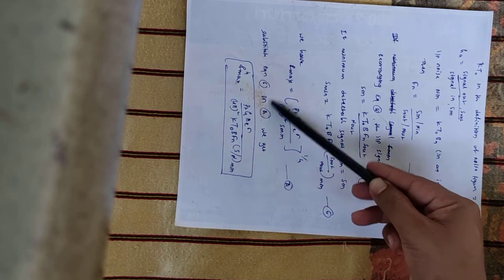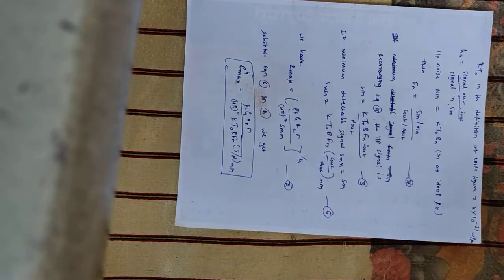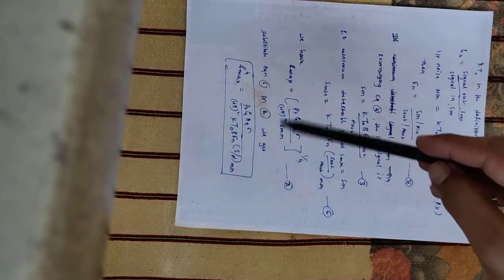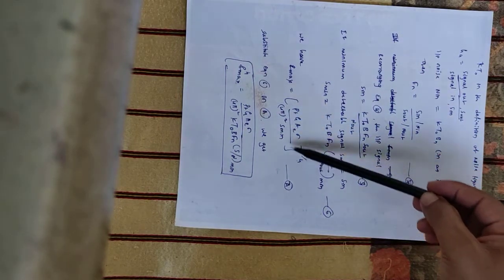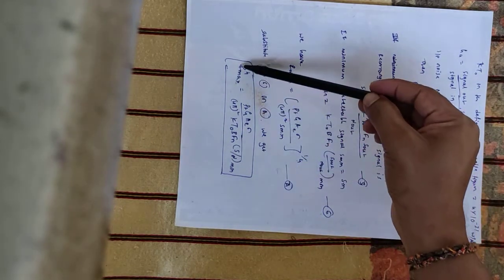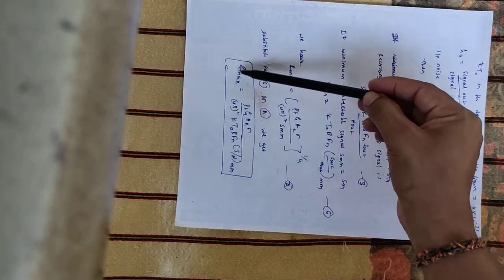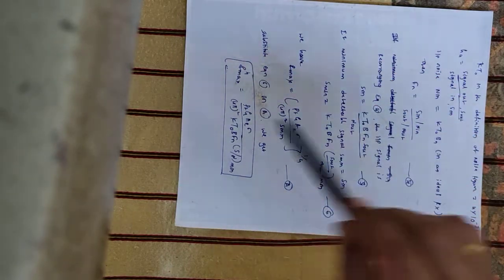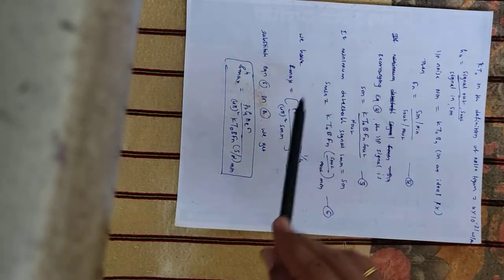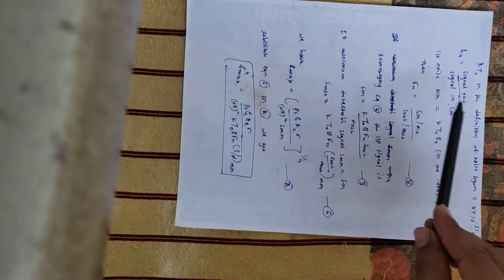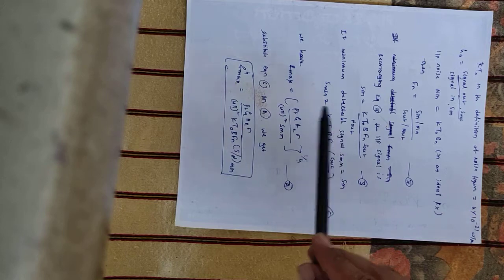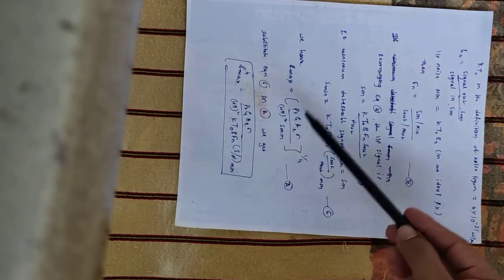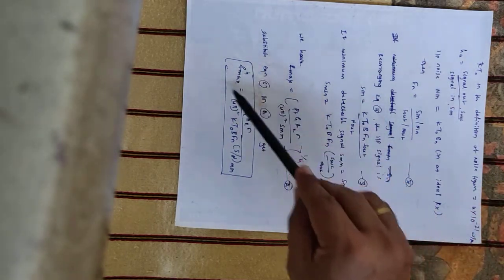This is the expression for the maximum radar range equation. What we have done here is taken the signal-to-noise ratio and substituted how much SNR is present in the radar receiver into the maximum radar range equation. Thank you.